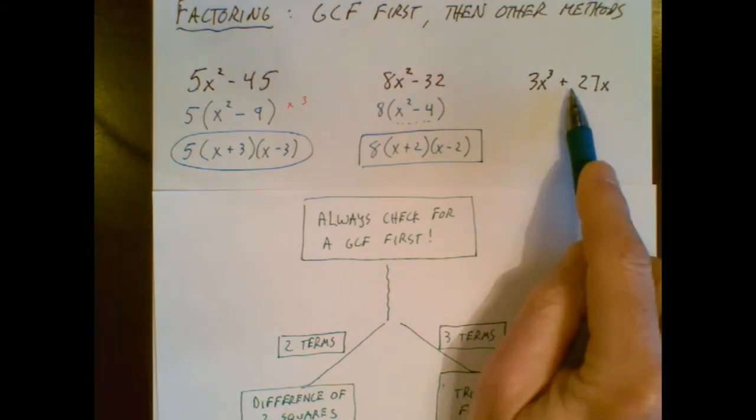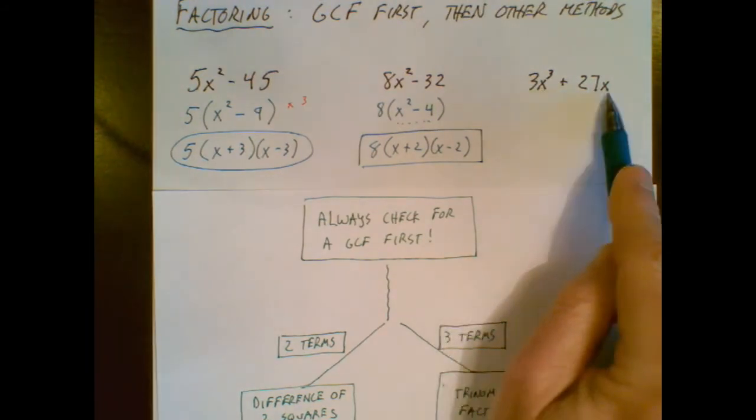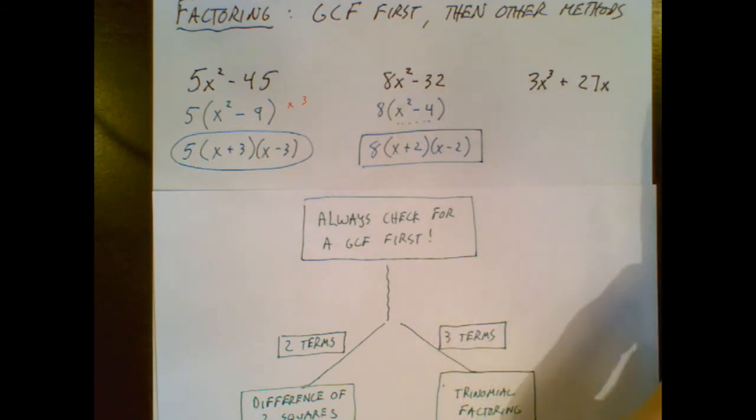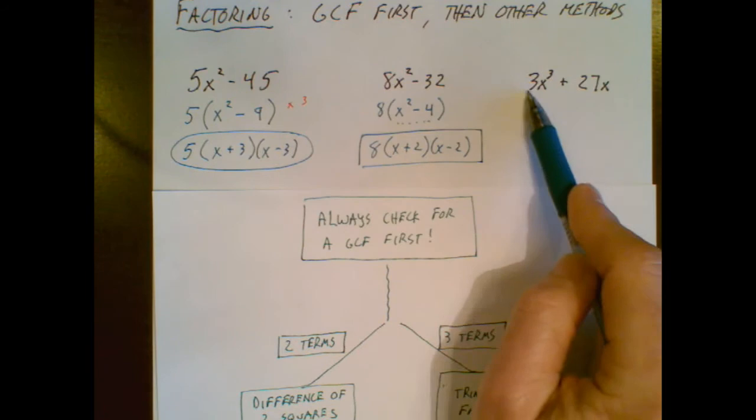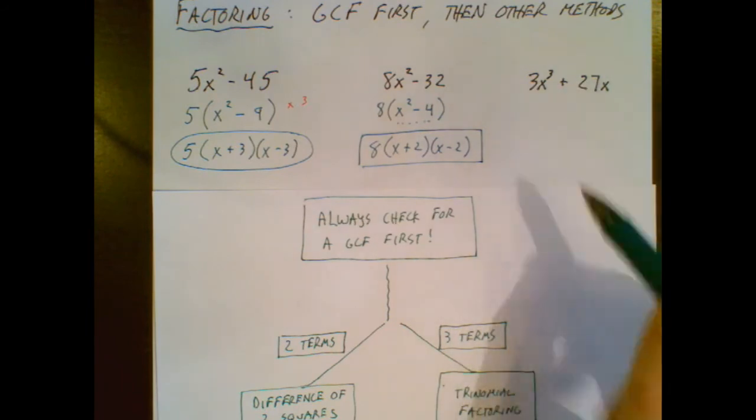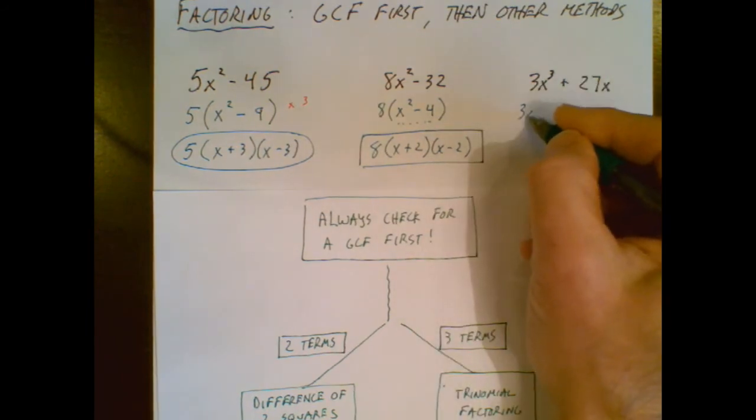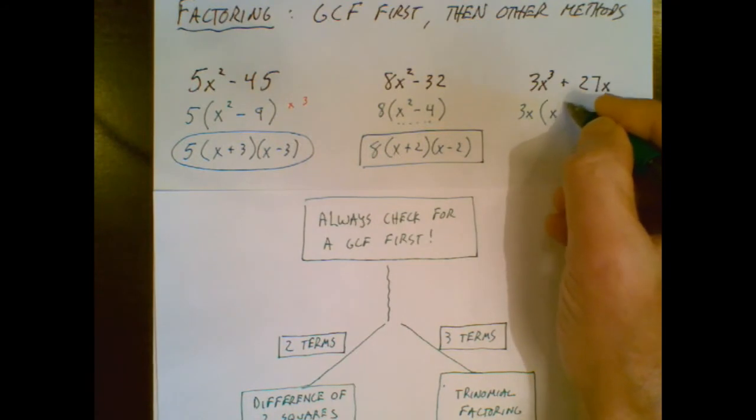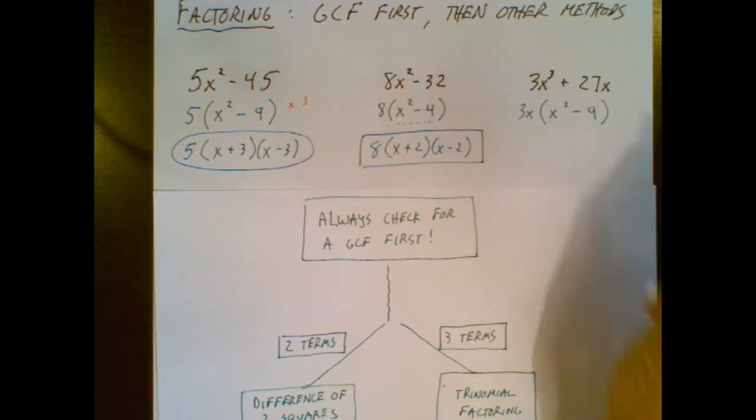One a little bit more complicated. It shares variables. So my GCF is going to include the variable that has the smallest exponent. I also have a GCF between these two. A 3 is a number that divides evenly into 3 and 27. So my GCF is 3x. Left inside is x squared minus 9.